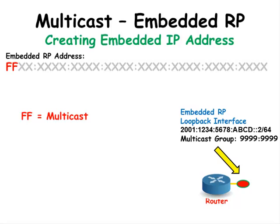Now we're looking at the embedded Rendezvous Point IP address format. Most of the digits are grayed out because those sections we're not going to concentrate on yet. We're only going to focus on the section in red, and we will eventually get through all of the IP address.